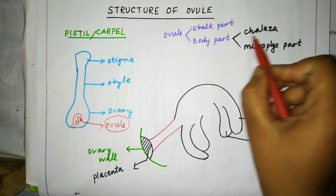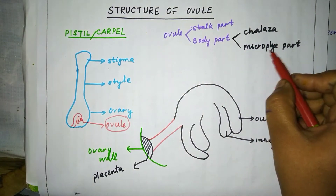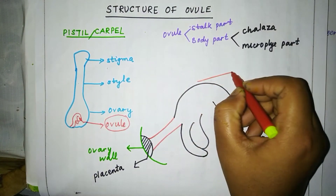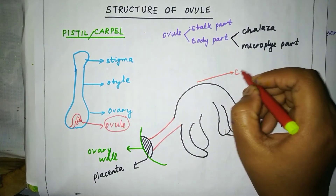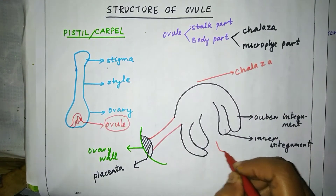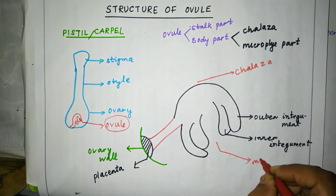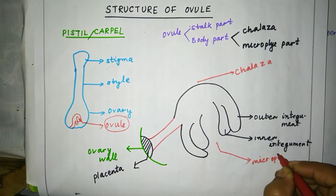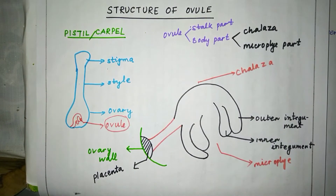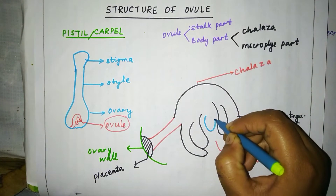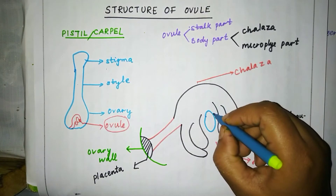The body part has two parts: the chalazal part and the micropyle part. The chalazal part is present at the base — this is the chalazal. And this is the micropyle. Inner to the integument, the embryo sac is present.